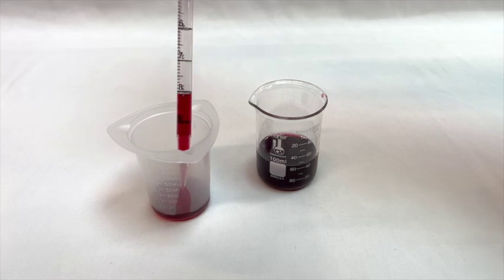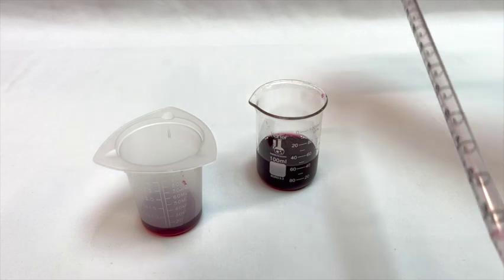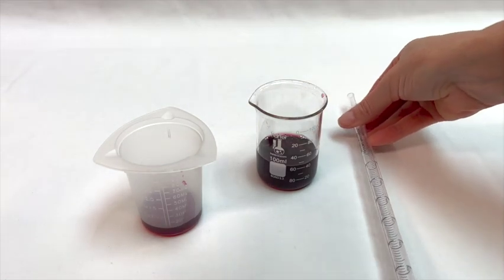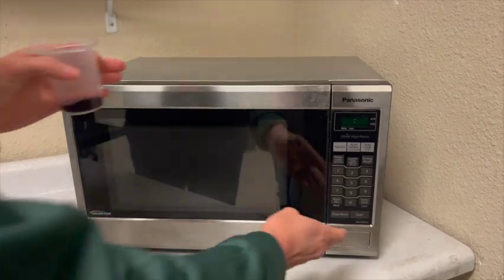We will start off by gathering our wine sample. Place 10 ml of your sample into a beaker. If you are testing multiple wines, make sure you label your beakers. Then place your sample in the microwave and boil it for about 60 seconds at medium power.